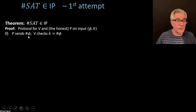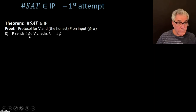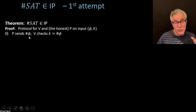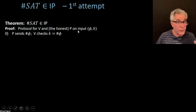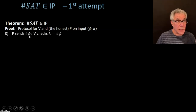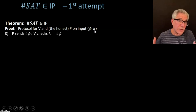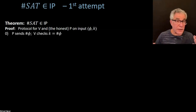So the prover is going to send, first of all, a claim about the number of satisfying assignments. The honest prover is going to send the right value. The verifier does not know if the prover is honest. The honest prover is going to send the number of satisfying assignments altogether, and the verifier just makes sure that that matches up with the input. If it doesn't match up with the input, the verifier is going to not be convinced that the input is in the language, so it's going to reject at that point.